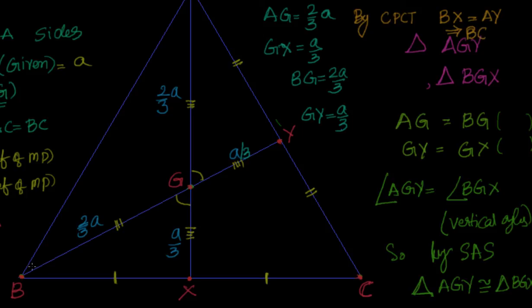Which gives me 2BX equal to 2AY. That is nothing but 2BX is nothing but BC which is equal to 2AY that is equal to AC. So if BC equal to AC obviously you know that we are talking about the isosceles triangle.